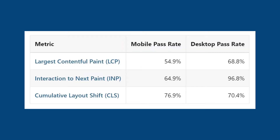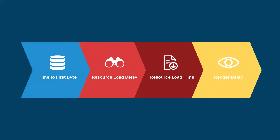Data from Google's Chrome User Experience Report shows that Largest Contentful Paint is the hardest core web vital to pass. On mobile, just over half of websites provide a good LCP experience at least 75% of the time.